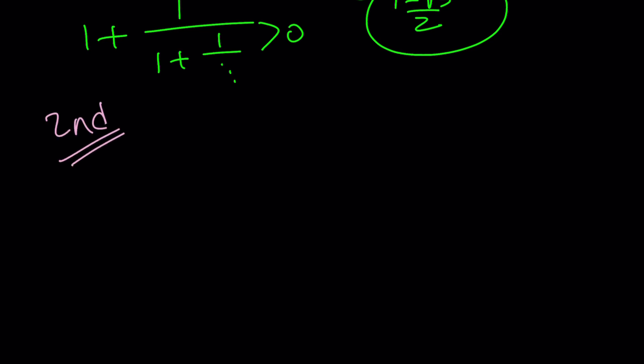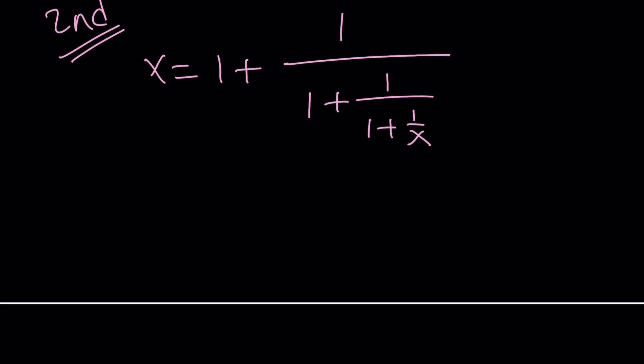Here's the second method. We have x equals 1 plus 1 over 1 plus 1 over 1 plus 1 over x. Obviously, you can make a common denominator. You can continue doing that. For example, this will be x plus 1 over x. When you flip, it's going to be x over x plus 1.